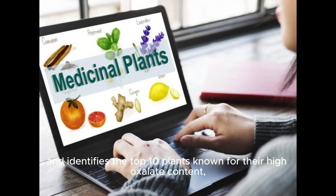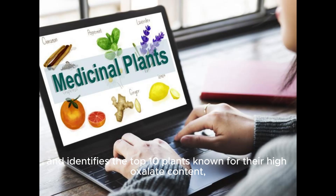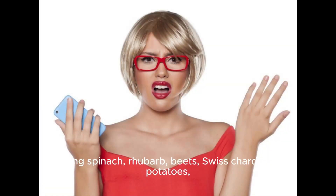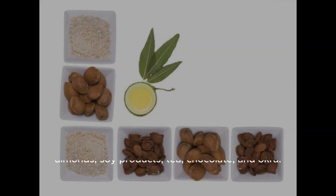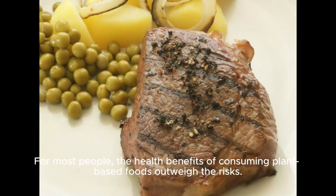This video explores the dangers associated with dietary oxalates and identifies the top 10 plants known for their high oxalate content, including spinach, rhubarb, beets, Swiss chard, sweet potatoes, almonds, soy products, tea, chocolate, and okra.